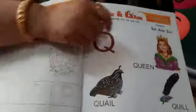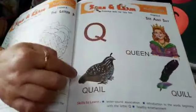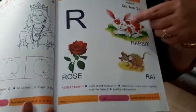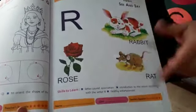Now again turn the page. Q, queen, quail, quill. R, rabbit, rose, red.